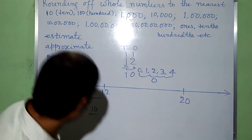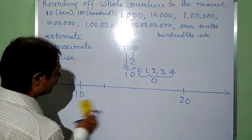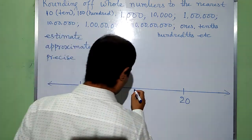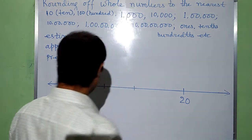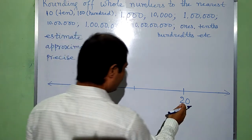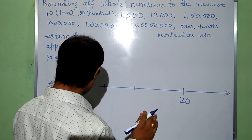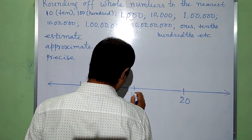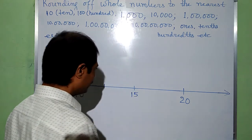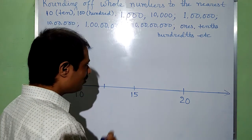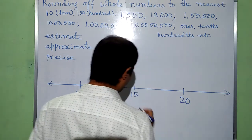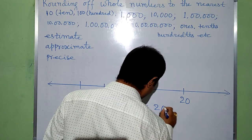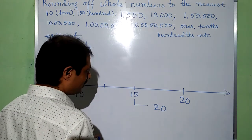Now let's take another example. What will happen if there is a number that is just halfway between 10 and 20? Suppose this number is 15. For this, we have to go ahead to the right side. 15 is nearer to 20, so we have to convert 15 to 20.